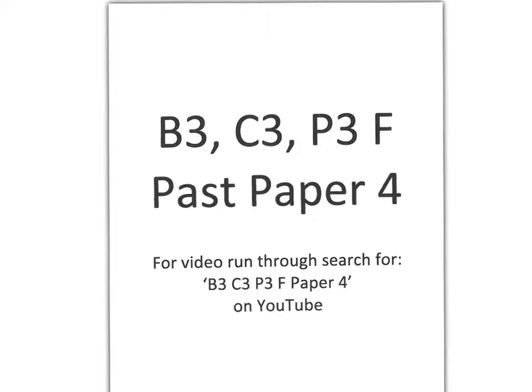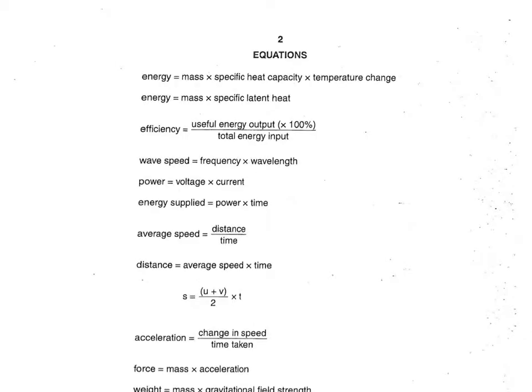This is the run-through for B3C3P3 Foundation Paper 4. Make sure you've done the first three before you start marking this one. Remember you've got this equations table at the front of your exam — you'll always get this. It's particularly important for the physics section where the answer is essentially given to you if you can just put in the right numbers.